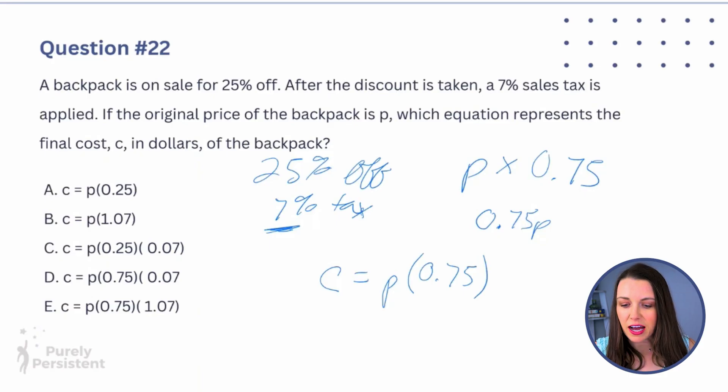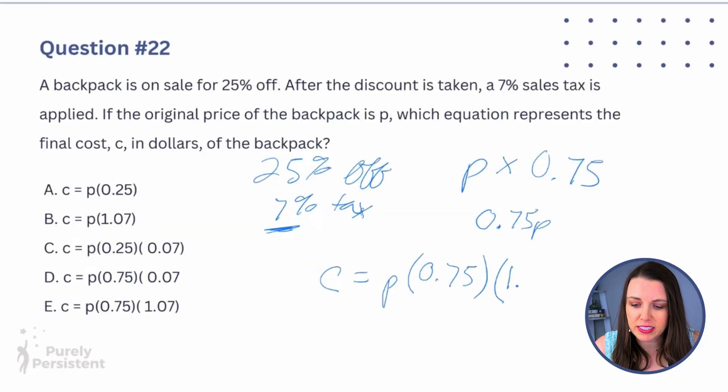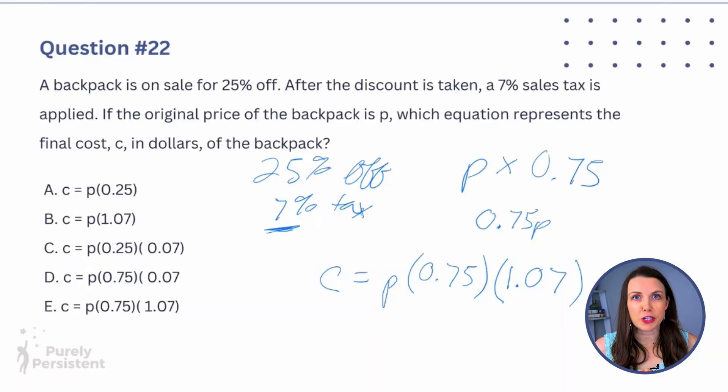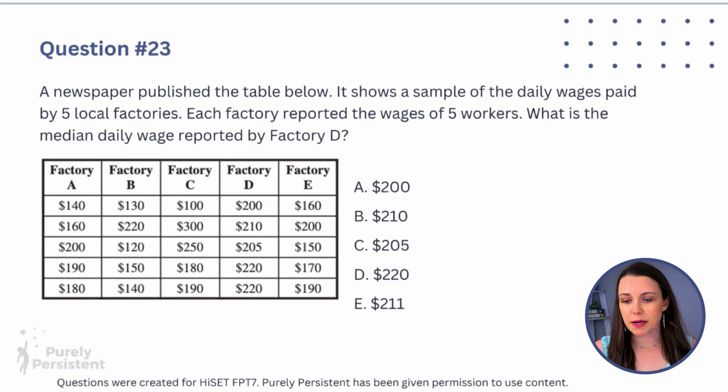So the cost equals 0.75P times 1.07 — multiplying by 1.07 gives me the discounted price plus the 7% tax all in one step. That represents the total cost of the item. The answer is E.